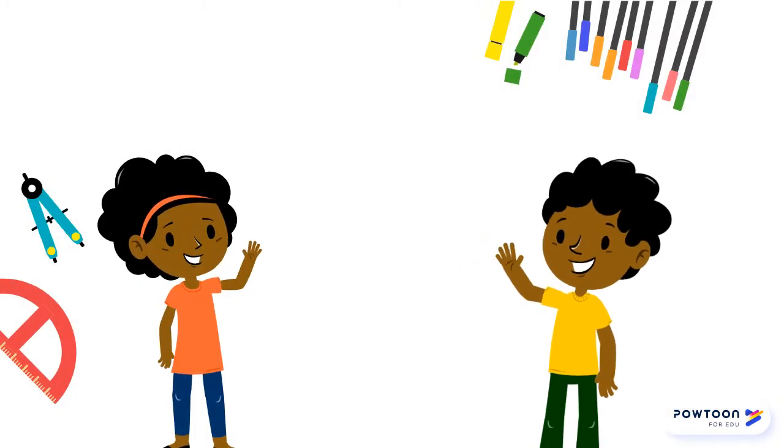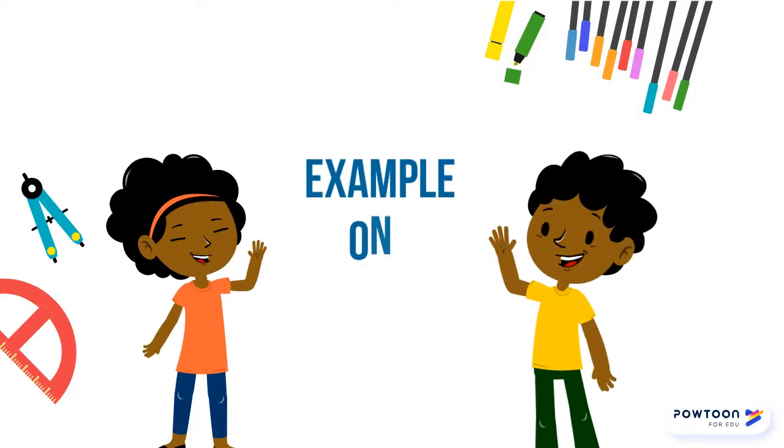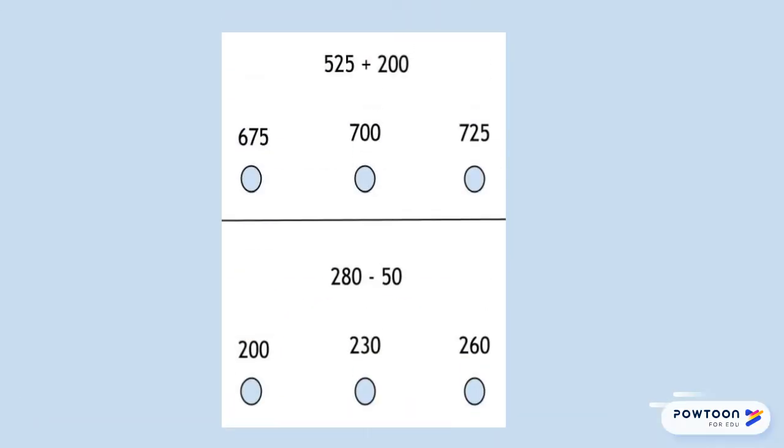Let's look at our first example. Here's an example of a page you would see during the MCF. You can see there are two problems on the page. Each problem has three answers to choose from.